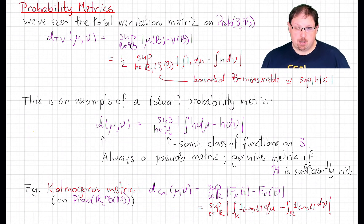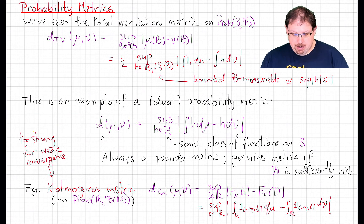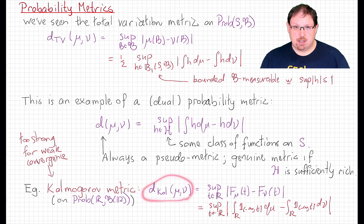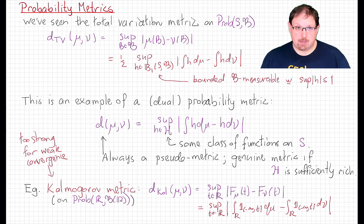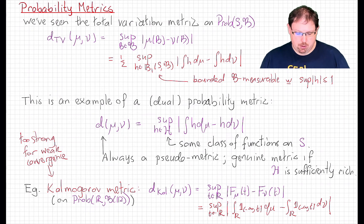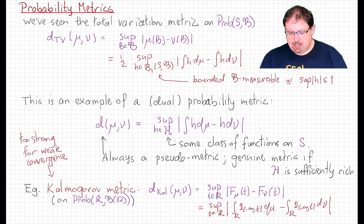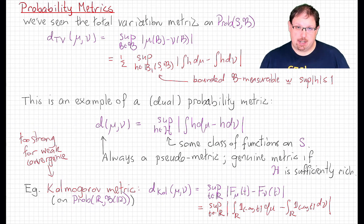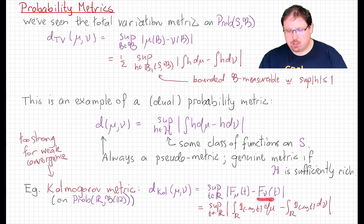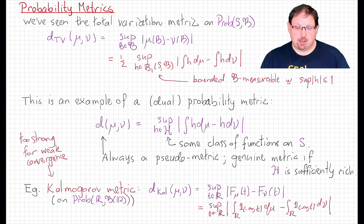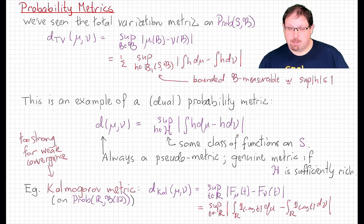In fact, the Kolmogorov metric is a pretty strong metric — it's too strong to metricize weak convergence. That is to say, if a sequence of probability measures converges in this metric, it will certainly converge weakly. But weak convergence, à la the Portmanteau theorem, is equivalent to pointwise convergence of CDFs at continuity points of the target CDF. So if one of the two measures is absolutely continuous with respect to Lebesgue measure, then this metric exactly metricizes weak convergence to that measure.